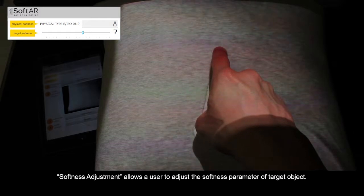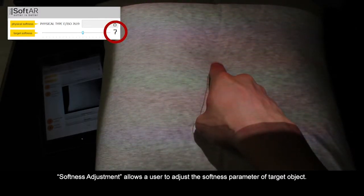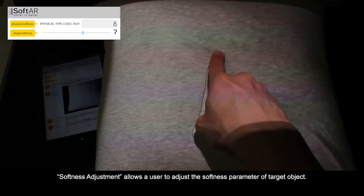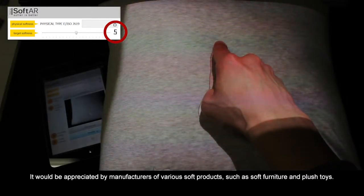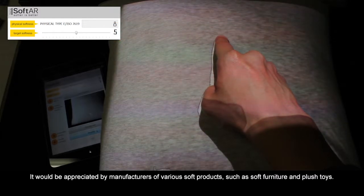Softness Adjustment allows a user to adjust the softness parameter of the target object. It would be appreciated by manufacturers of various soft products, such as soft furniture and plush toys.